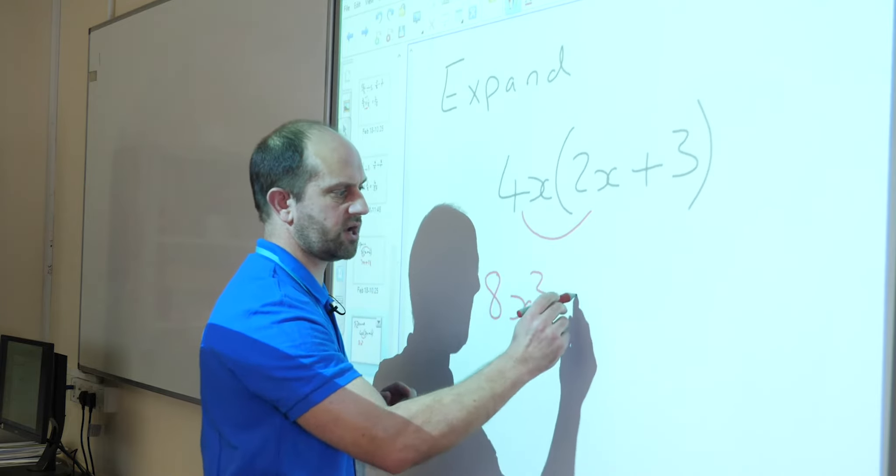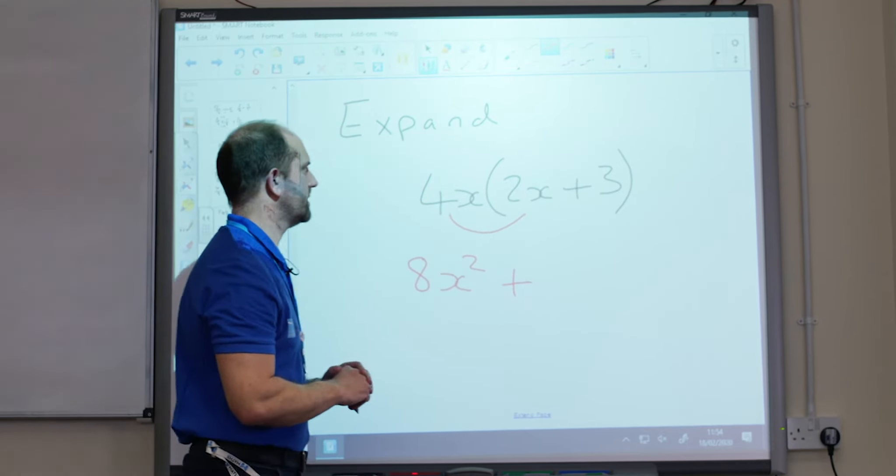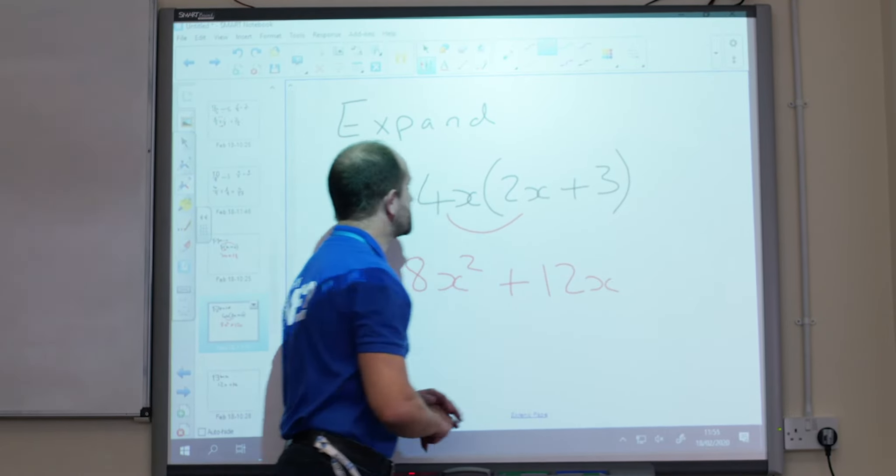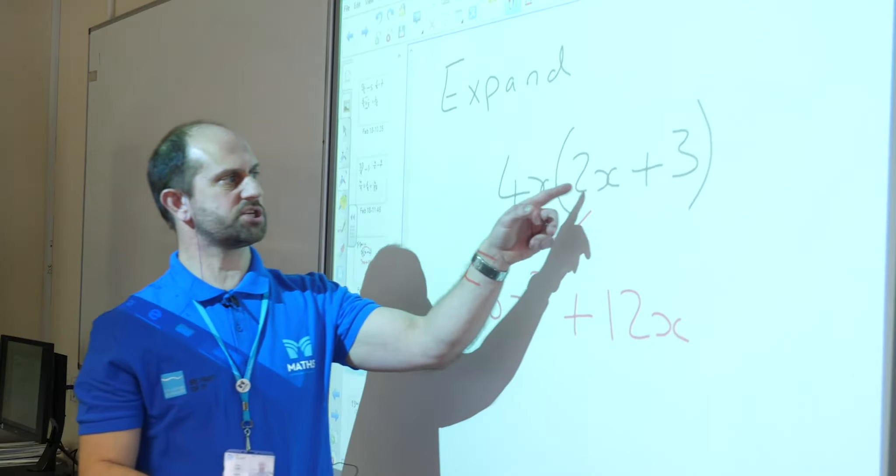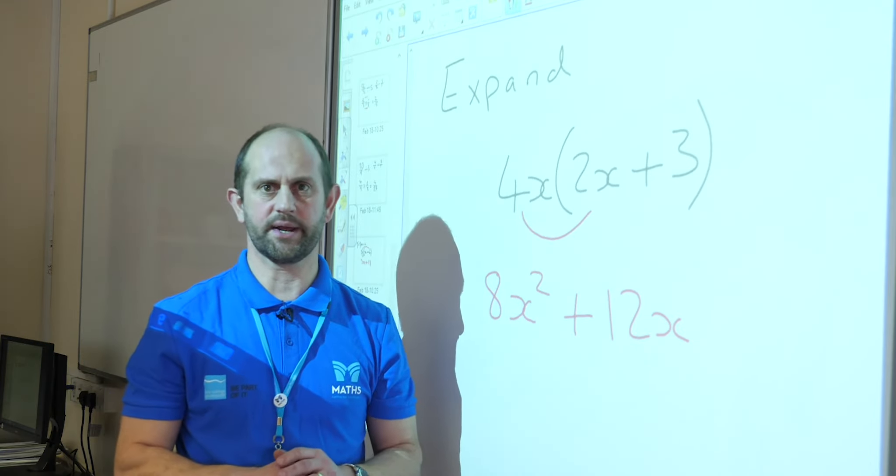I've got a positive sign here again, so a positive goes in there. 4x times 3 is 12 plus the x. So 4x(2x+3) equals 8x² plus 12x.